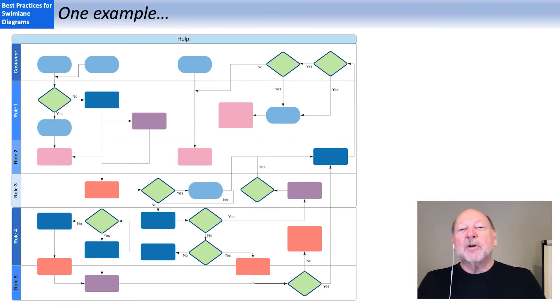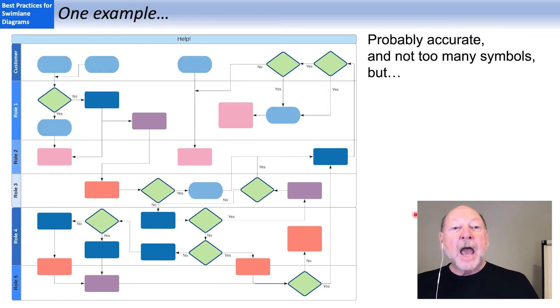One example that I came across recently, I've reproduced here in Lucid Chart. I haven't included the step names or the labels on the flows. I just want to look at the graphic elements. And I think it was an accurate diagram, didn't have too many different symbols. But I found the colors a little distracting.